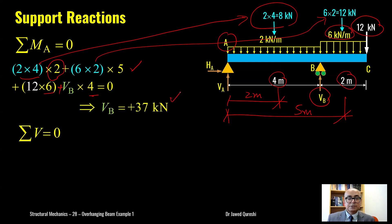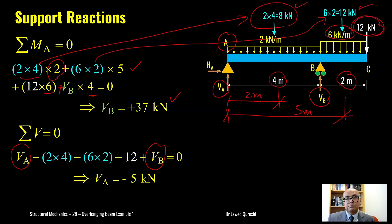And then I will use summation of vertical forces equal to zero. Now vertical forces upwards are VA plus VB. You can see these two are positive. And downward forces are this one 8 kN first UDL and UDL on the overhang portion 6 times 2 plus the point load at free end which is 12 kN. When we add this up we get value of VA as 5 kN. In this way we have determined the vertical reactions.